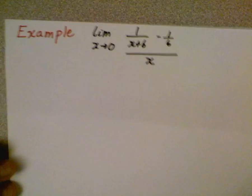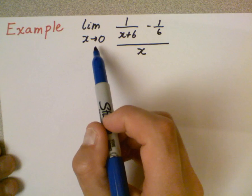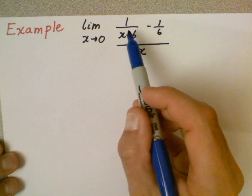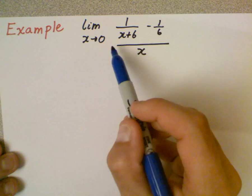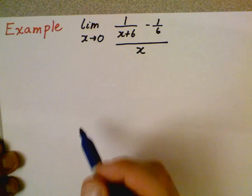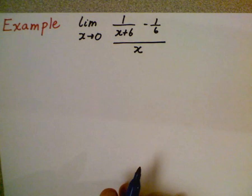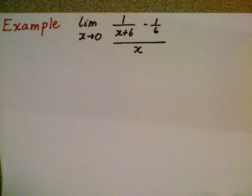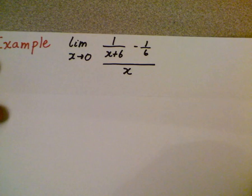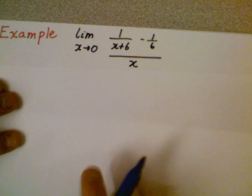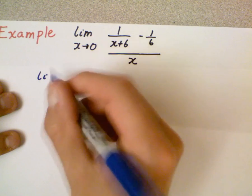So there it is, the limit as x is approaching zero of 1 over x plus 6 minus 1 sixth all divided by x. Again what I want to do here is just start by rewriting the problem. Okay so we're going to go ahead and do that.